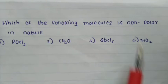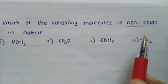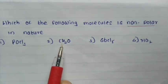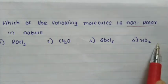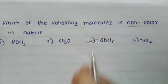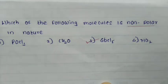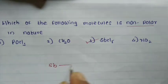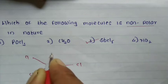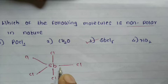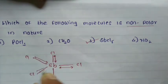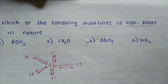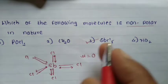Question 5: Which of the following molecules is non-polar in nature? Options: 1. POCl₃, 2. CH₂O, 3. SbCl₅, 4. NO₂. SbCl₅ is non-polar in nature because the dipole moments between Sb and Cl cancel each other. Therefore the net dipole moment is zero, making it non-polar in nature.